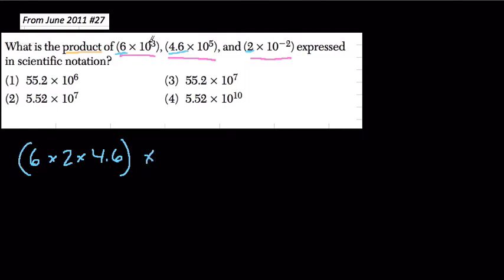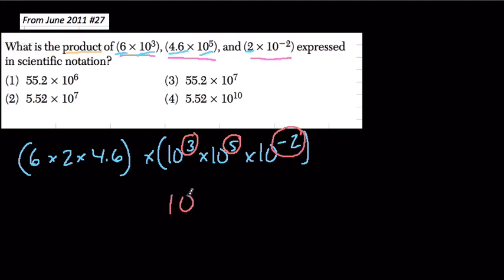And then I'm going to multiply that by the powers of 10. So we have 10 to the third times 10 to the fifth times 10 to the negative second. I can regroup this however I like since the only thing I'm doing is multiplying. I'll deal with the powers of 10 first because all we're going to do there is add the exponents. When we're multiplying, we add those exponents, and that'll be 10 to the sixth.